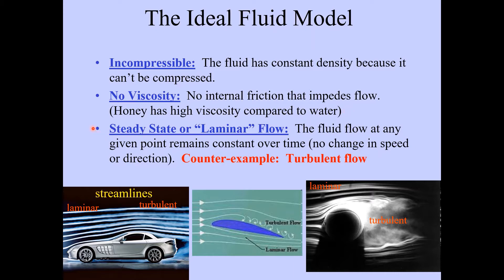The other thing we will be assuming in this part of the lecture is steady state, or what is called laminar flow. That means that the fluid flow at any given point remains constant over time — there's no change in speed or direction. The opposite of laminar flow is called turbulent flow, or turbulence.